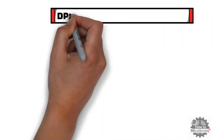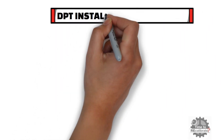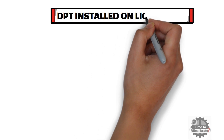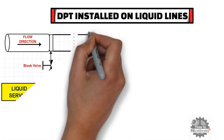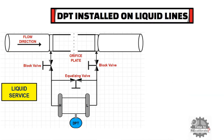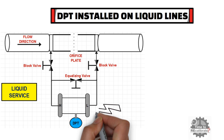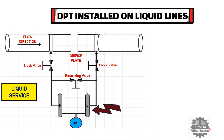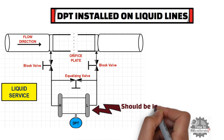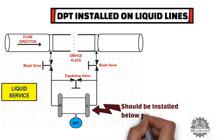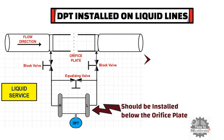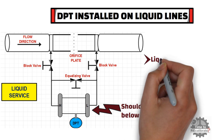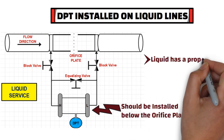First of all, let's start with the situation when a differential pressure transmitter is installed on liquid lines. As you can see from the diagram, for liquid lines, the DP transmitter should be installed below the orifice plate. The reason behind this is that liquids have a property of self-draining.